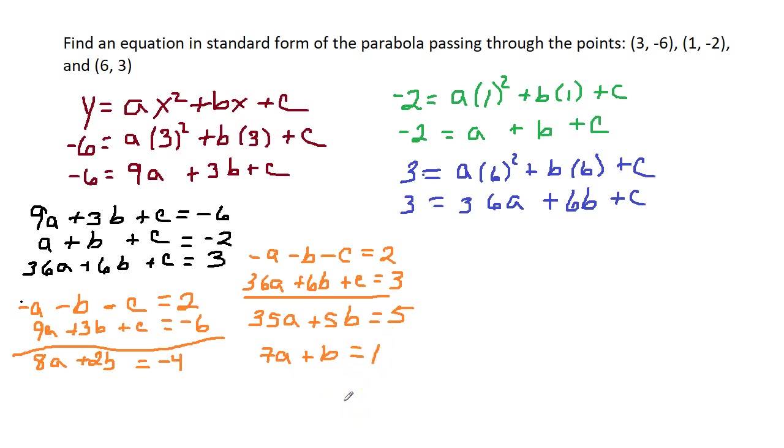Now, I can do an elimination with the two orange equations. This 8a plus 2b equals negative 4. Those are all even numbers. I can divide them all by 2 to make that smaller. So, I have 4a plus b equals negative 2. I am going to do an elimination with these two. I am going to take negative 1 times this equation to eliminate the b's.